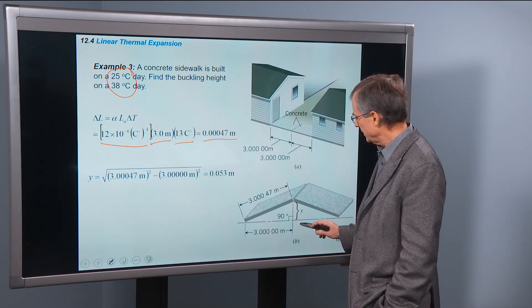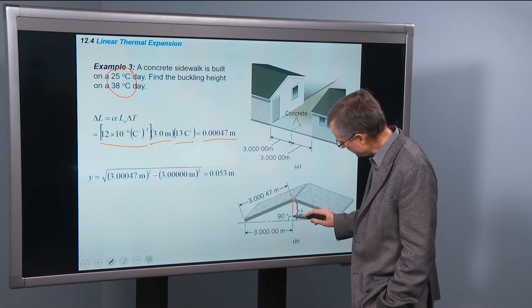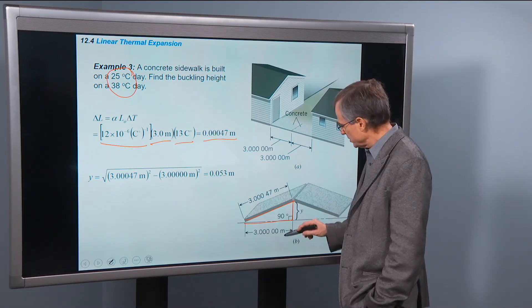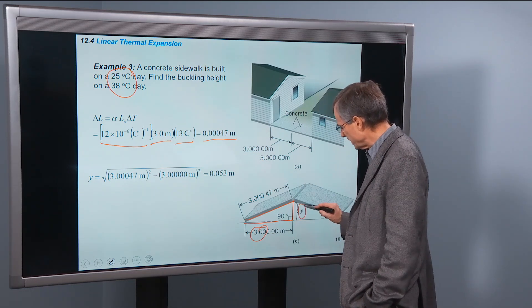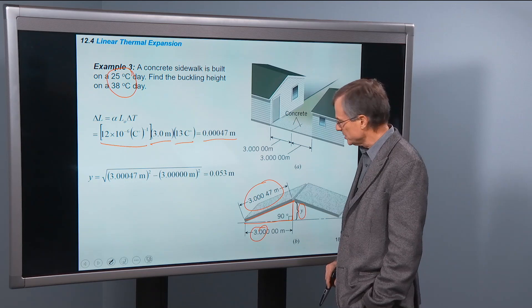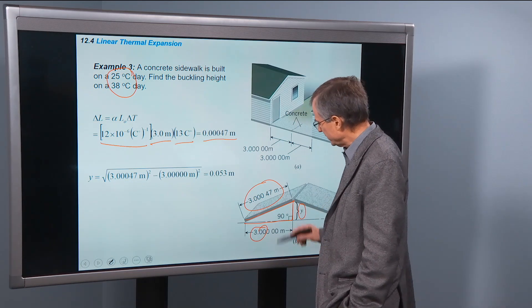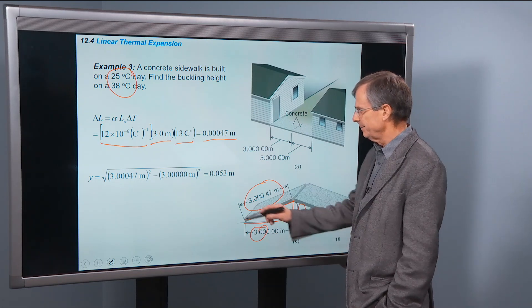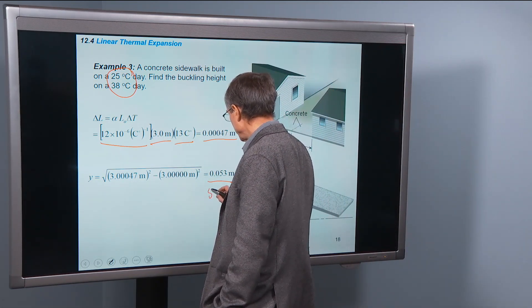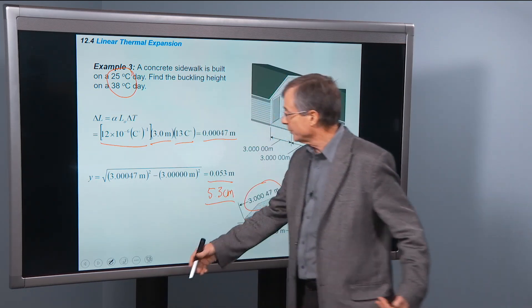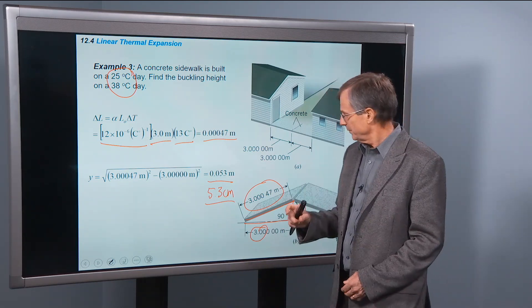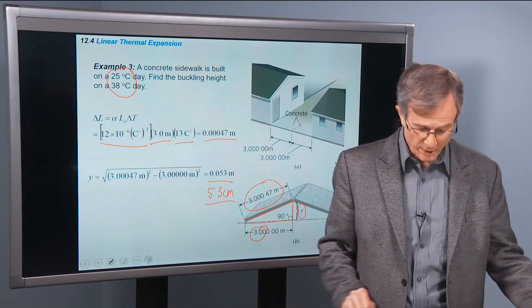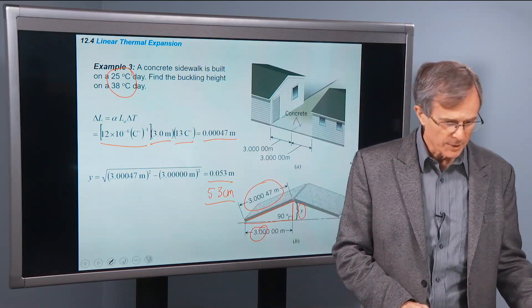So this is the right triangle. One side here, that's y. This side is 3, and then this hypotenuse is 3.00047. So this side squared plus this side squared equals this side squared. And we can solve for y by subtracting off this side, the 3 squared, and then taking the square root. And just using Pythagorean theorem, you get 0.053 meters, that's 5.3 centimeters. So even for a 3 meter piece of concrete, 5.3 centimeters, that's about like that. That's a pretty good sized buckle. So when you're pouring concrete, you might want to leave a little expansion joint in there.